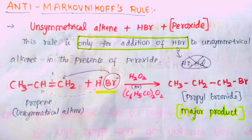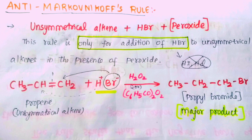The anti-Markovnikov rule applies only for unsymmetrical alkenes plus HBr plus peroxide — not HCl. We use hydrogen peroxide (H₂O₂) or benzoyl peroxide (C₆H₅CO₂O₂) as the peroxide. The anti-Markovnikov rule is just the opposite of the Markovnikov rule.